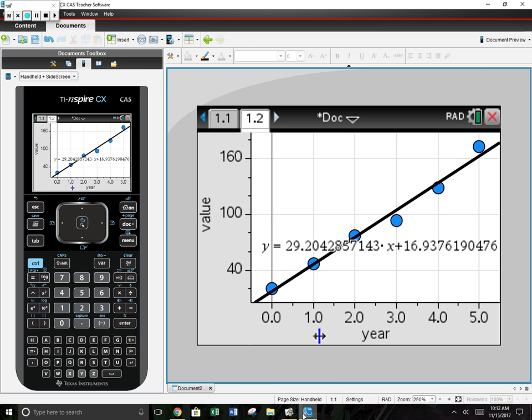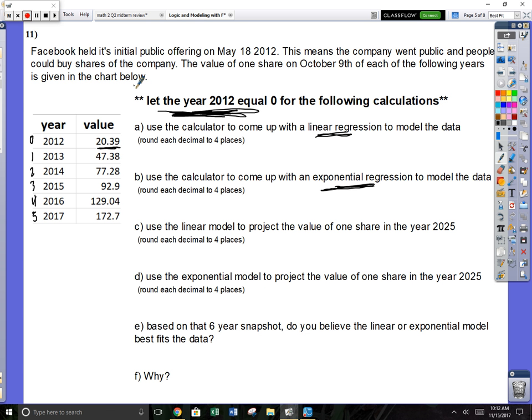Once you're in here, everything's going to be under the menu. Hit menu, let's go analyze, number four, and we're going to do option six, regression. Let's show a linear regression. There you go. That's the answer to number one A. Your linear regression is y equals 29.0243 times x plus 16.9376.